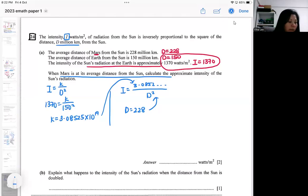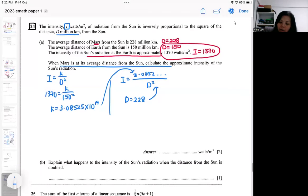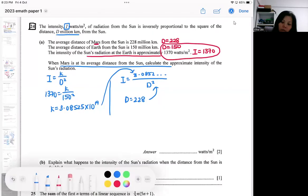Then the problematic part is actually part b. The question is asking, what happened to the intensity of the radiation when the distance is doubled? So I'm going to be doing it generically.